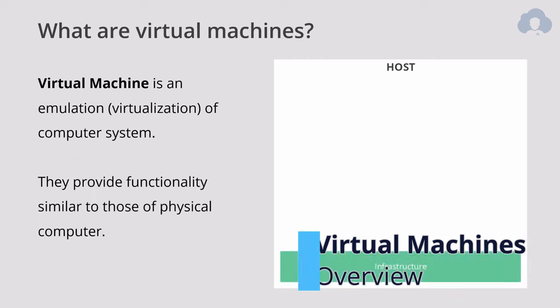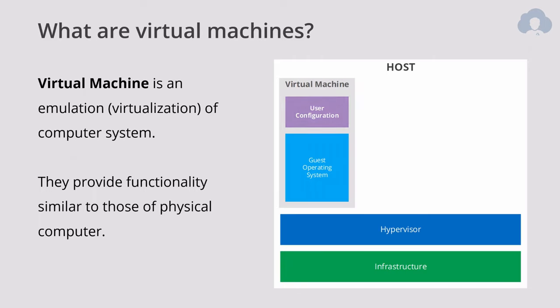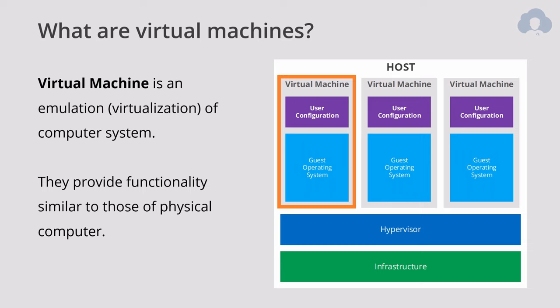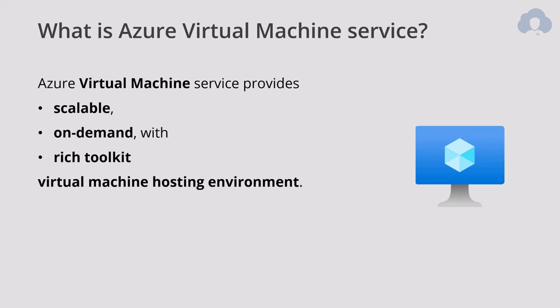Let's start with virtualization. Virtualization is emulation of a computer system — those virtual machines work similarly to how a physical computer would work. What you're purchasing is a guest operating system being emulated, plus the space to do your user configuration. In Azure, this is your virtual machine hosting environment. It provides you scale from even tens or hundreds to thousands of servers. It's on demand, so you can purchase it whenever you need it, and there are tools allowing you to work with virtual machines very easily and very fast.